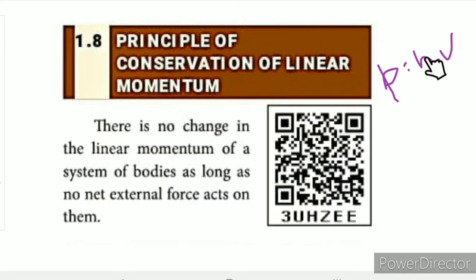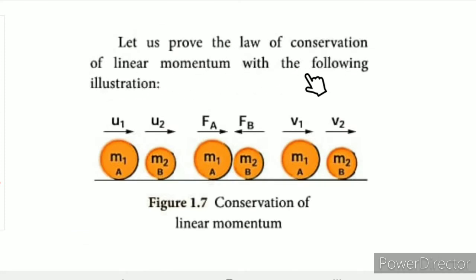Let us prove the law of conservation of linear momentum with the following illustration. A and B are two objects. This is mass M1 with initial velocity U1, and this is mass M2 with initial velocity U2.